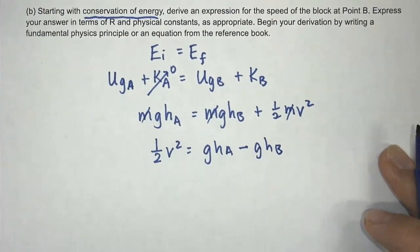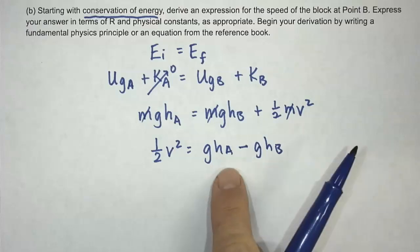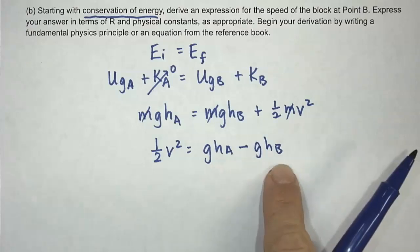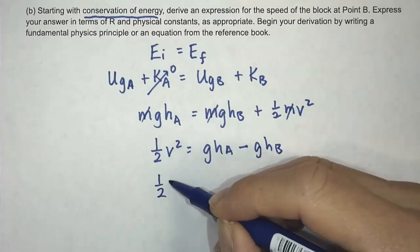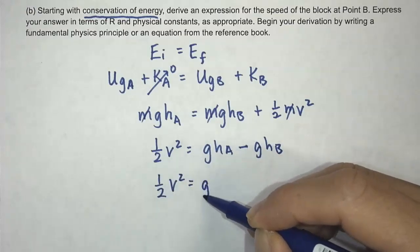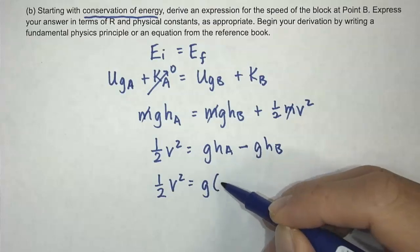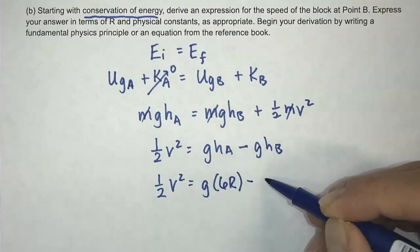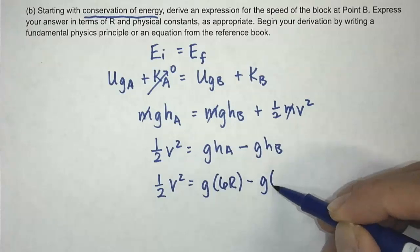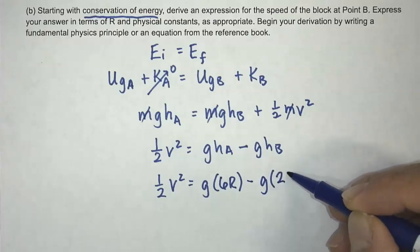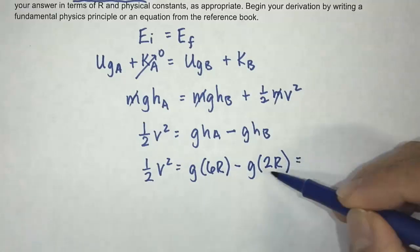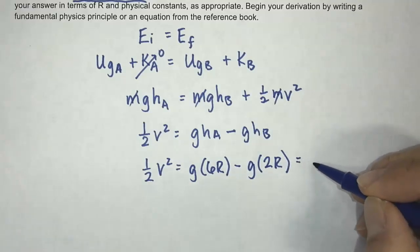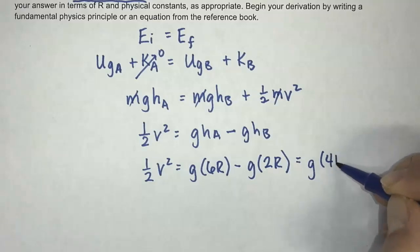Now we can do a little substitution here. We've got too many unknowns. So that's going to be 1/2 V squared equals, gHA is 6R, 6R, that's how high it is, minus g, and then this is going to be 2R, which gives us 6 minus 2 is 4. So that gives us g4R.